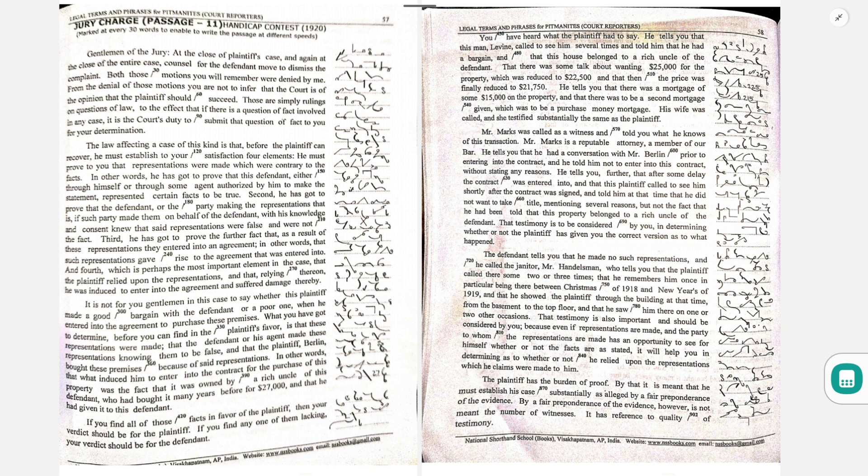He must prove to you that representations were made which were contrary to the facts. In other words, he has got to prove that this defendant, either through himself or through some agent authorized by him to make the statement, represented certain facts to be true.